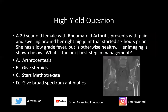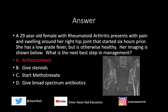Coming back to the original question: a 29-year-old female with rheumatoid arthritis presents with acute pain and swelling around her right hip starting six hours prior, with a low-grade fever. Remember that RA is a risk factor for septic arthritis — the pain is acute, not chronic, and she has a fever. The left hip is totally normal, but the right hip is completely eroded with joint space loss — a classic example of septic arthritis. The first step is always to tap the joint: arthrocentesis. That will always be the answer on the USMLE. Hope that was helpful — please tune in next week for another high-yield USMLE tutorial.